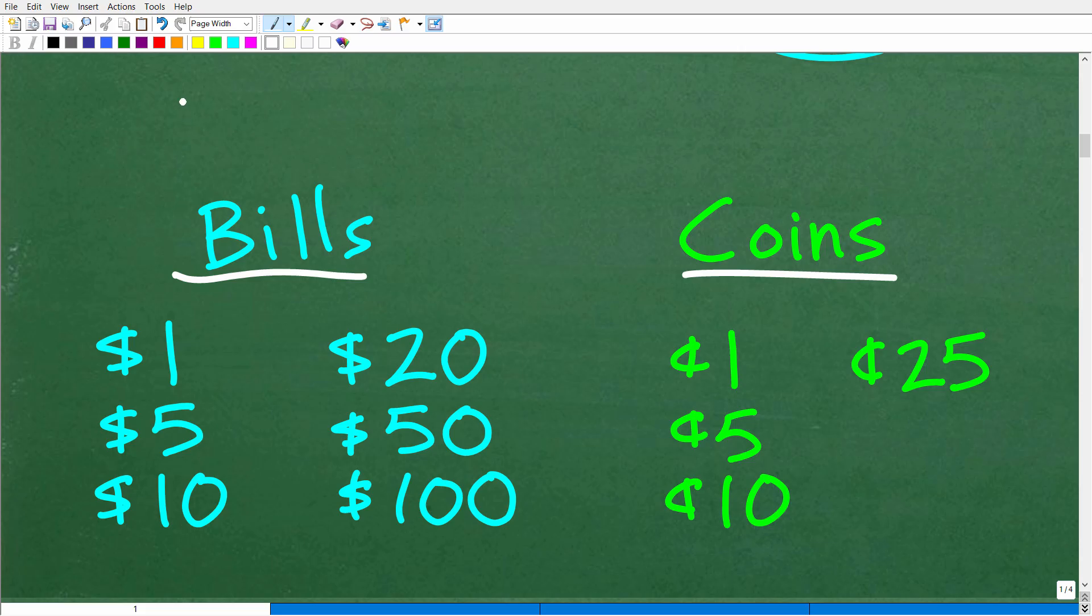So a bill is a piece of paper, and in the United States we usually have a picture of a president. So we have a $1 bill, which of course is a dollar. Then you have a $5 bill, a $10 bill, a $20 bill, $50 bill, $100 bill. And there are other bills as well, but these are the most common.